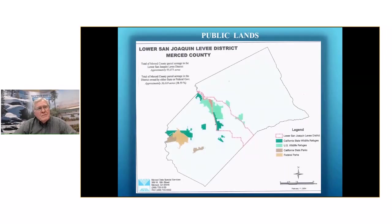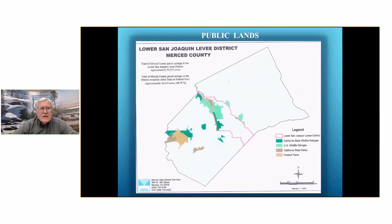Another issue is when the Bureau buys lands for the restoration program and takes them off the tax roll. This is just another example of that — this is Merced County with an identification of the public lands that are in the county.